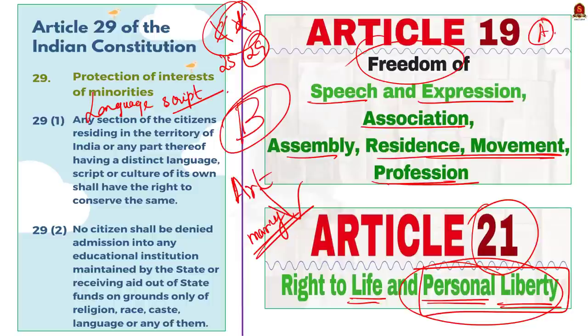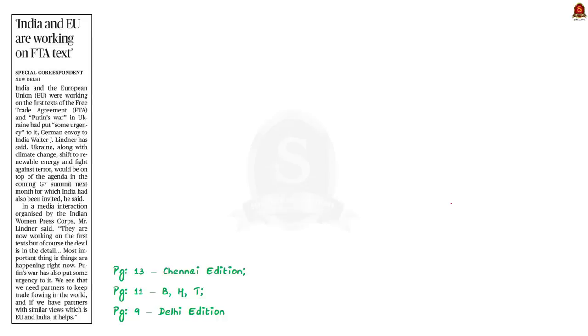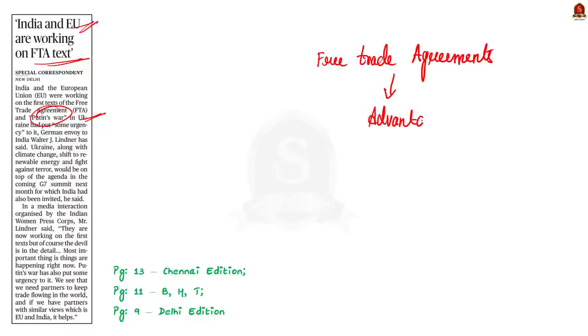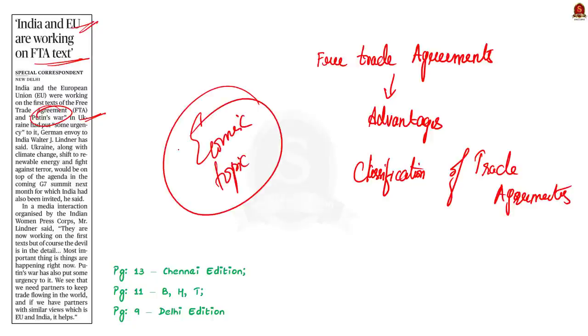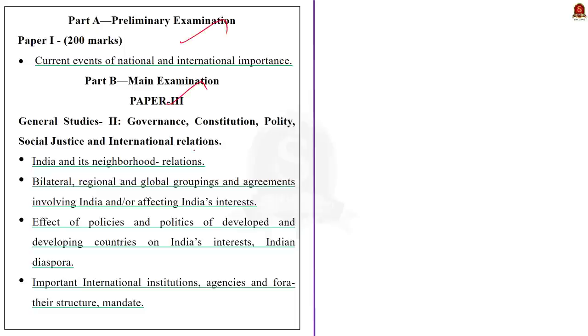That's all for today's previous year question discussion. Now let us take up the news article discussion. This news article says that India and the European Union were working on the first text of the free trade agreement, with some urgency due to Putin's war in Ukraine. In this context, let us quickly go through what a free trade agreement is, its advantages, and also the classification of other trade agreements. This is a very important economic topic for your preliminary examination — that is why I took this article.